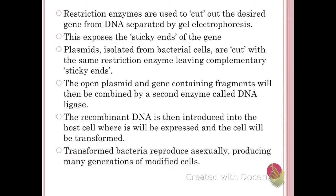So let's go through the actual process. Restriction enzymes are used to cut out the desired gene from DNA, separated by gel electrophoresis. We talked about restriction enzymes a little bit during DNA profiling. Those restriction enzymes are going to be used to cut the DNA in a specific spot, selecting for a specific gene. This exposes what's known as the sticky ends of the genes — an area where other DNA can be bonded to it, so it can be inserted into that vector.